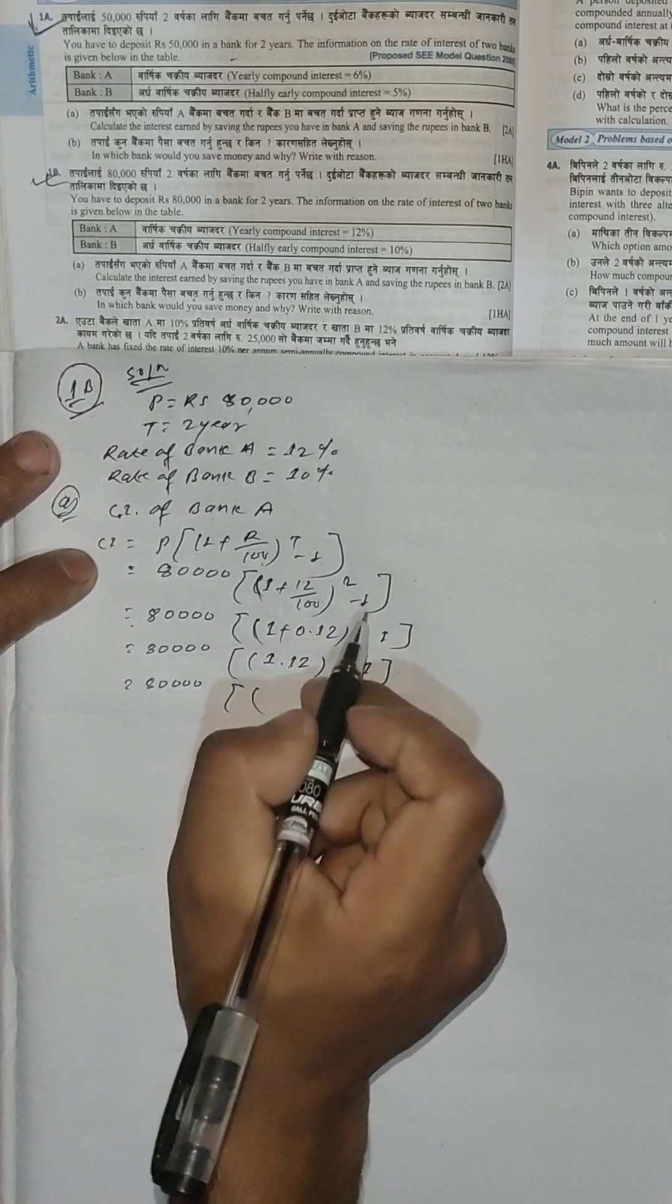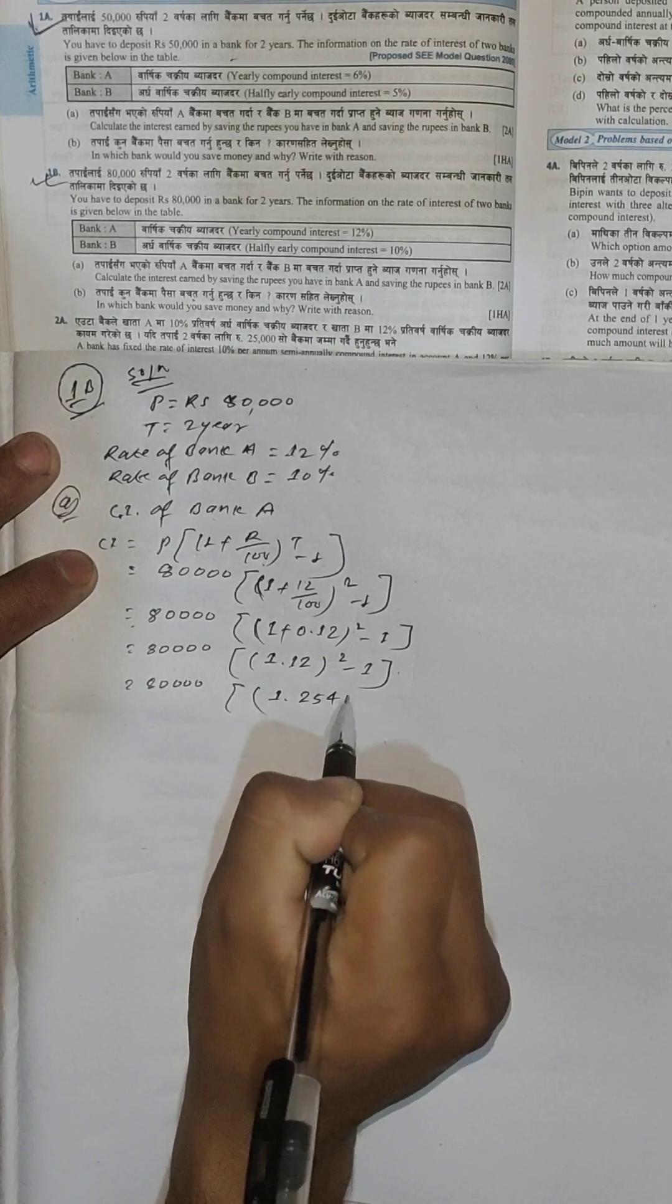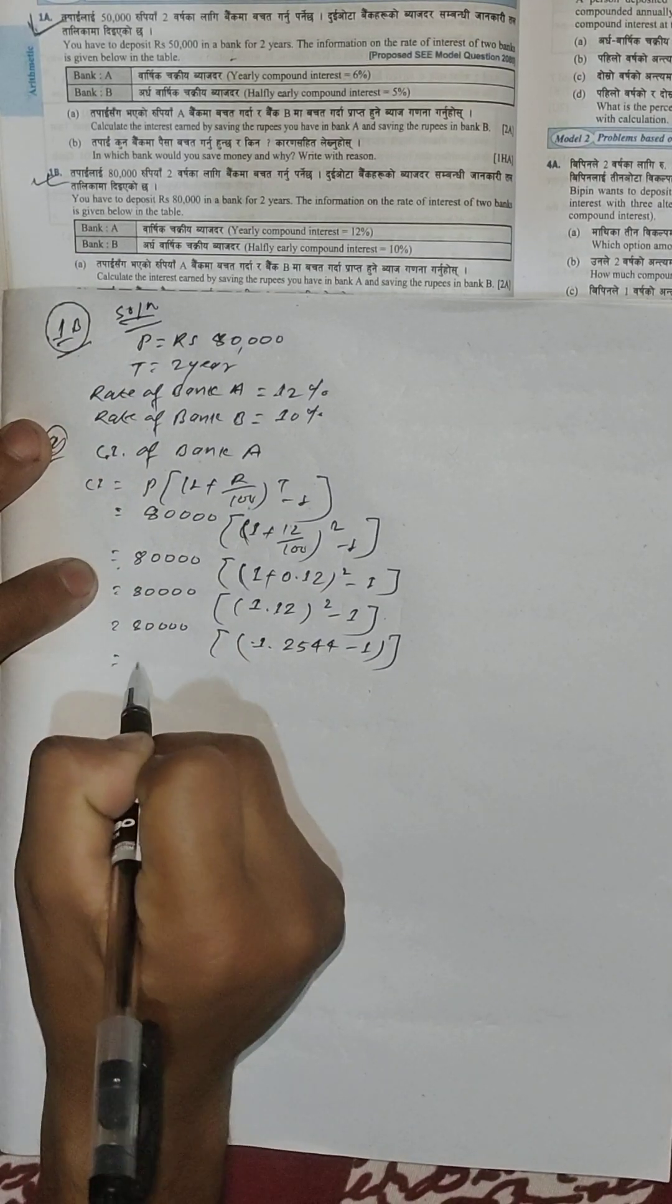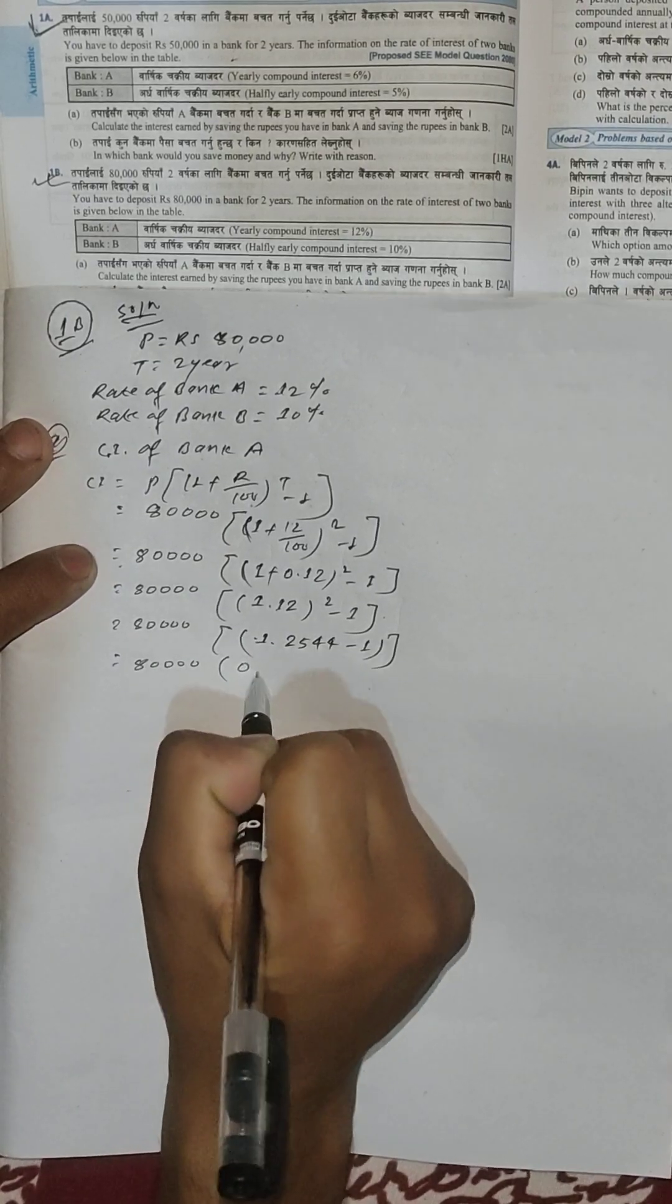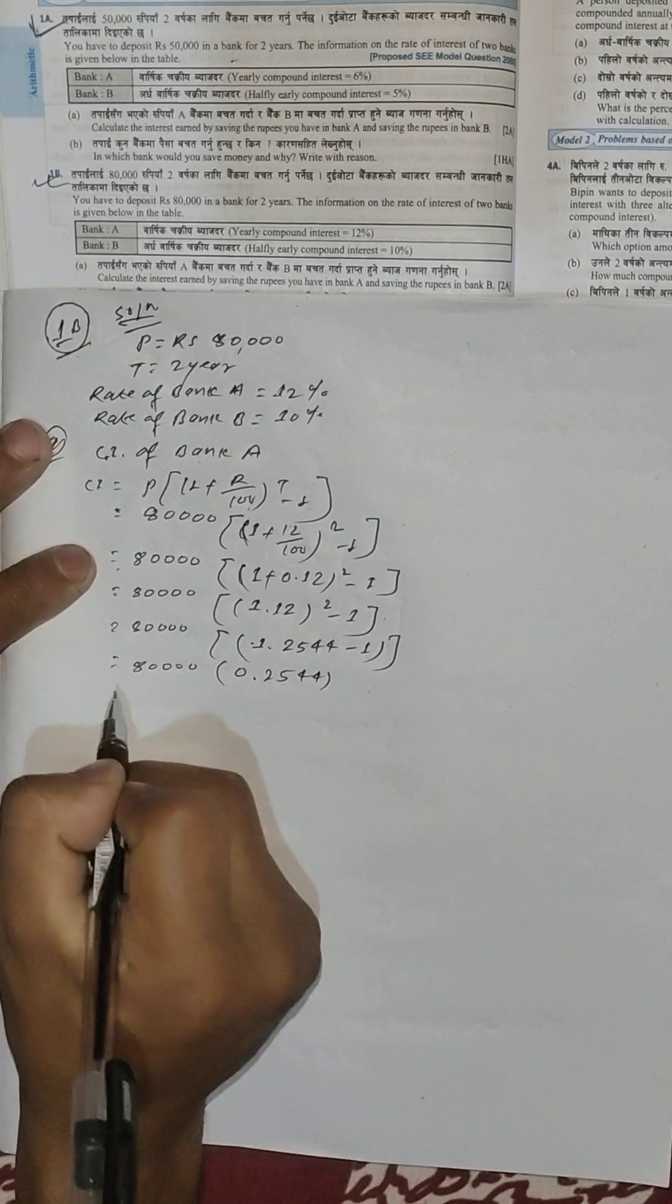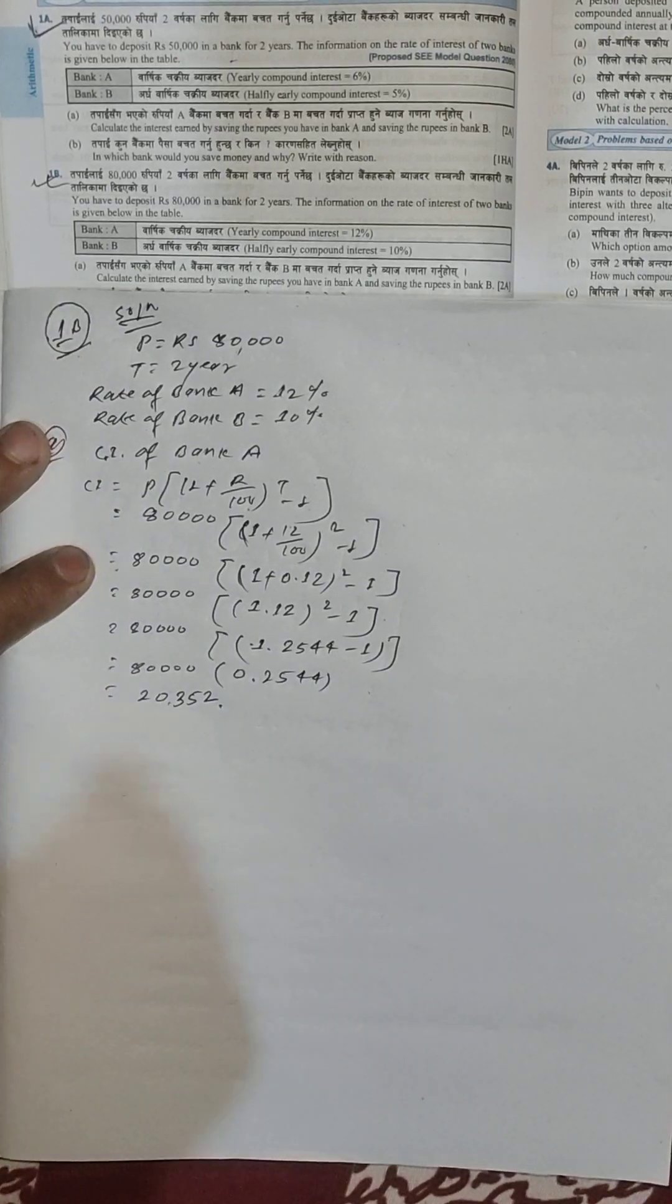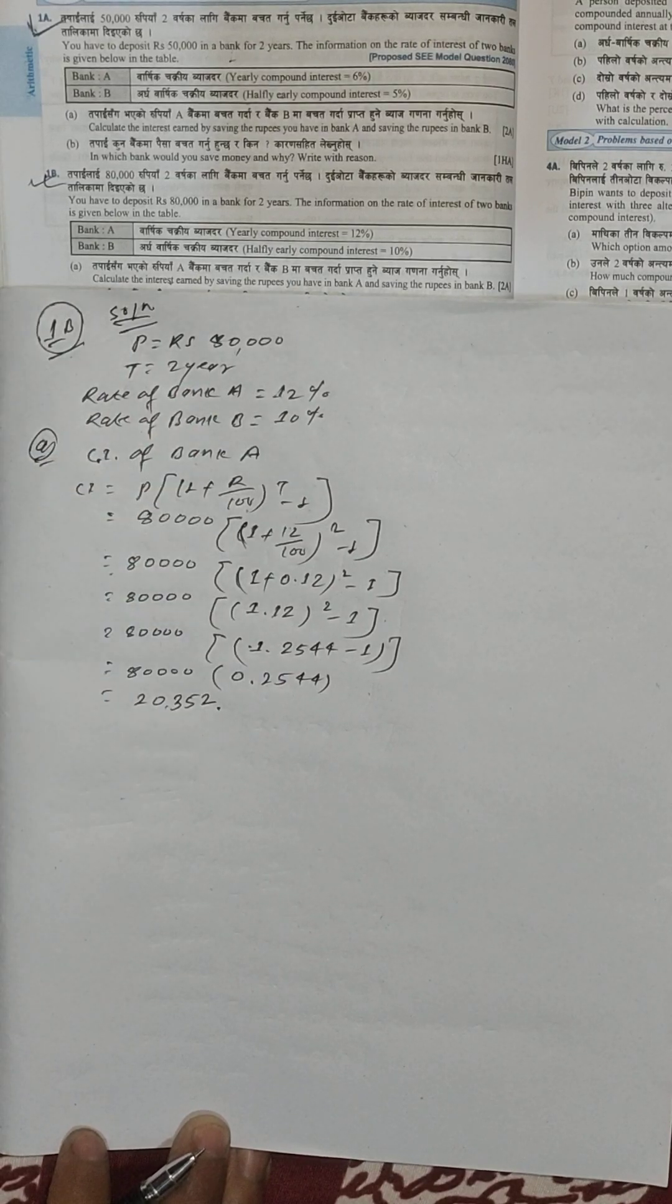1.12 squared is 1.2544, minus 1 equals 0.2544. Now multiply: 30,000 times 0.2544 equals Rs. 7,632. This is Bank A's interest.